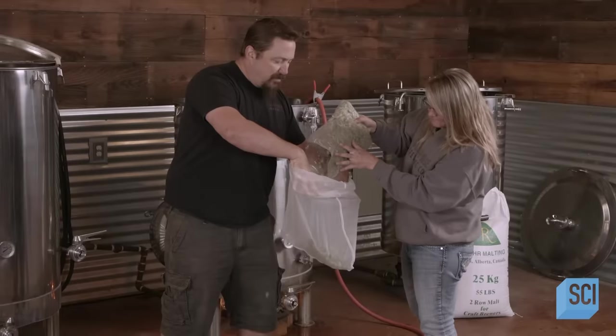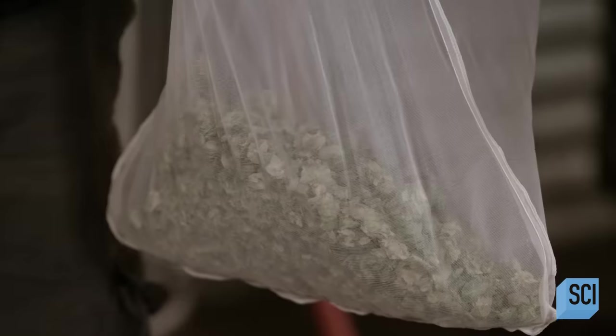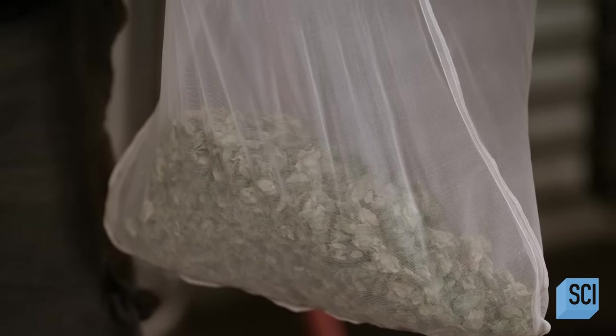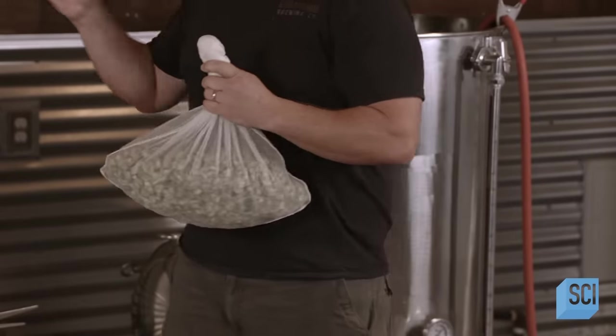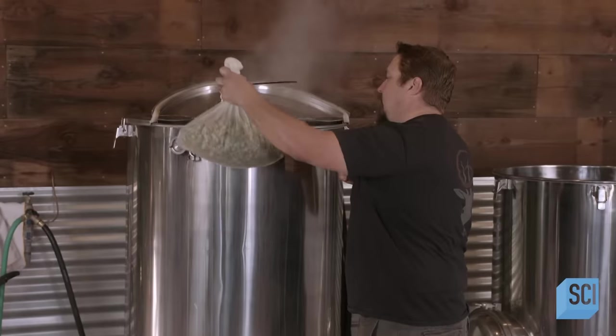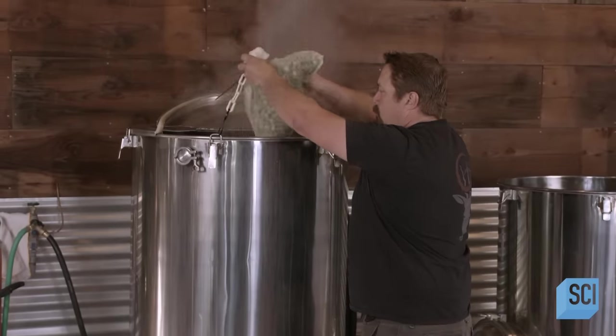After an hour or so, he transfers just the liquid, called wort, to the boil kettle and gradually adds different varieties of hops. He brings the wort to a boil to kill off bacteria and sterilize it.